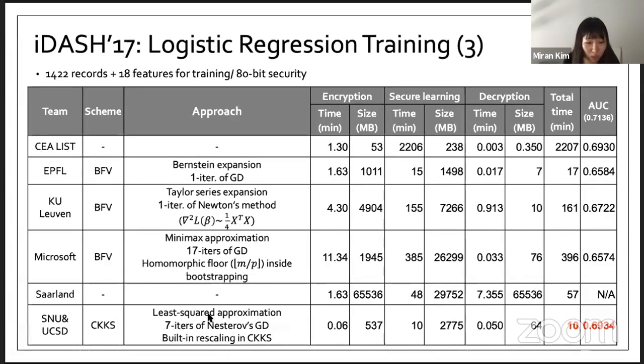The final solution was submitted by Seoul National University and UCSD. The solution was built on the CKKS scheme. CKKS scheme supports the built-in rounding operation very naturally, so they could take advantage of the rescaling operation. They used least-square approximation and they could repeat seven iterations of gradient descent. The experiment results show that the logistic regression training over a dataset with 14K samples with 18 features can be finished within 10 minutes.